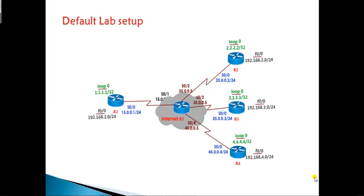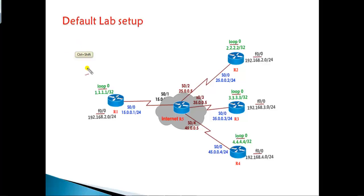In this video we'll try to understand the default lab setup which we are going to use for all our VPN labs. From here onwards, whatever labs I'm going to discuss — GRE labs, DMVPN labs, and IPsec VPN labs — I'm going to use the same topology for all the labs. Let me give an introduction and overview of what the default topology looks like.